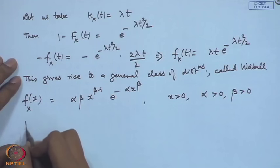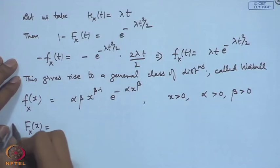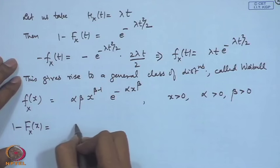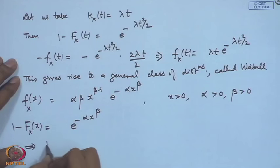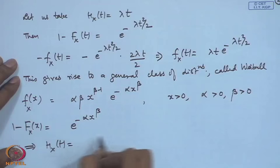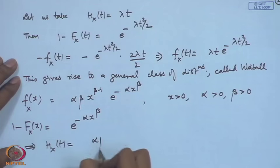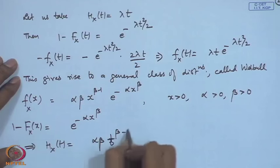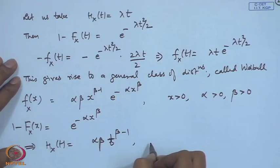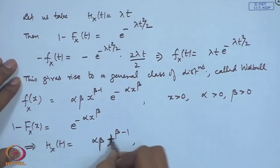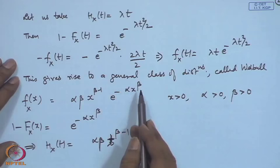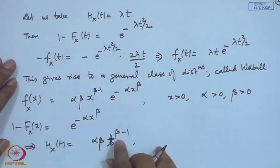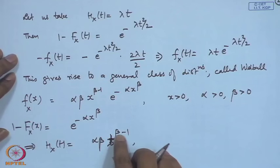For the Weibull distribution, 1 − F_X(x) = e^(−αx^β), so the hazard rate becomes αβx^(β−1), which is a power of x. This gives the general Weibull distribution. When β > 1, the failure rate increases with time — describing practical systems like televisions or manufacturing machines where wear increases over time.